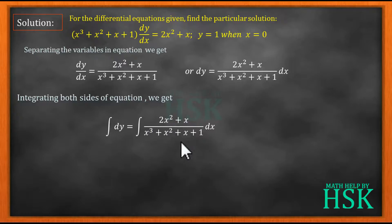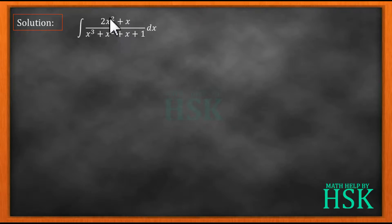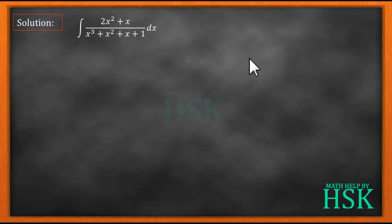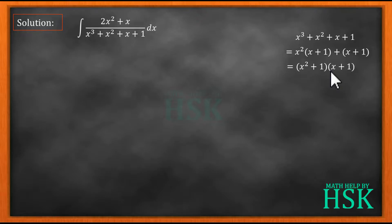On the right hand side we have this bulky expression and we have to integrate it, so it requires a lot of calculation and we are going to solve this integral separately. To integrate this, I see that the denominator is a cubic expression and it can be factorized. Taking x³ + x² + x + 1, I take x² common from the first two terms and x + 1 common, giving factors (x² + 1)(x + 1).